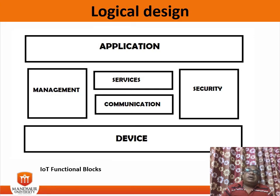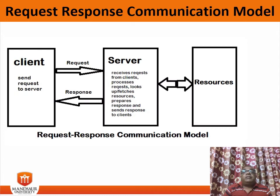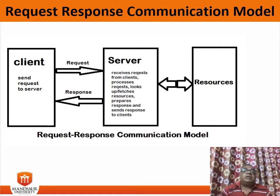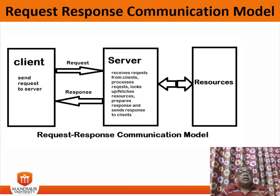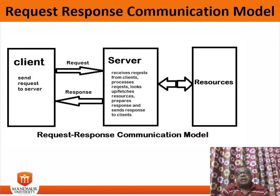Now the IoT communication models. The first model is the request-response communication model. In this model, the client sends a request to the server and the server responds to the request. When the server receives a request, it decides how to respond, fetches the data, retrieves resources and representations, prepares the response, and then sends the response to the client. Request-response is a stateless communication model and each request-response pair is independent of others.